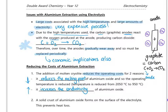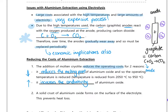Another thing that reduces cost is the solid crust of aluminium oxide that forms on the surface of the electrolyte. This crust prevents heat loss, which means we don't have to apply as much energy to keep the cell at such a high temperature. So the solid crust reduces costs by keeping heat in and reducing the amount of external heat needed.